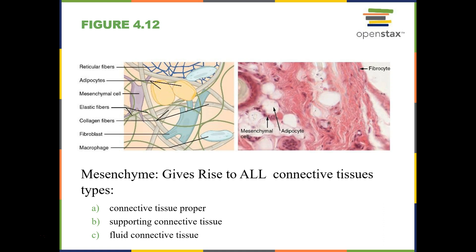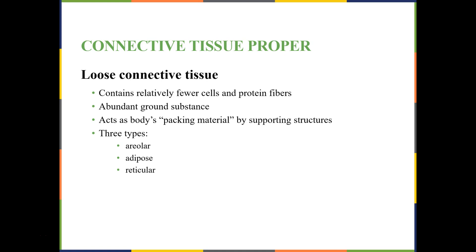The three types of connective tissue that mesenchymal cells can give rise to are: connective tissue proper, which can be loose or dense; supporting connective tissue, like bone or cartilage; and fluid connective tissue, like blood or lymphatic tissue. Let's look at the connective tissue proper first. There are two types — loose and dense — starting with loose connective tissue proper.